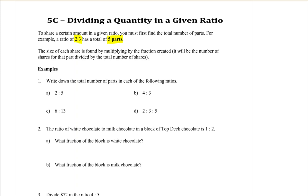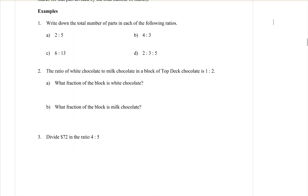Let's have a look. Question number one is just finding the number of parts. It says write down the total number of parts for each of the following ratios. All you have to do is add the numbers together. So the ratio 2 to 5: 2 plus 5 makes 7, so that is 7 parts in that ratio.